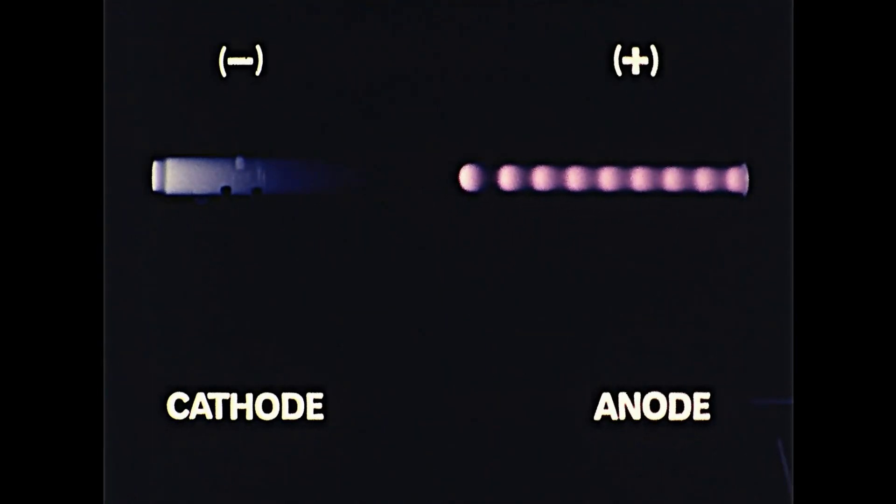They attributed this effect to something from the cathode, which they named cathode rays. Once cathode rays were discovered, investigators shaped new tubes to study them.